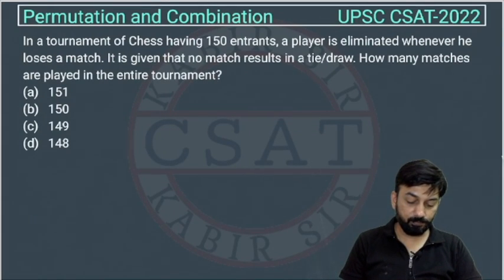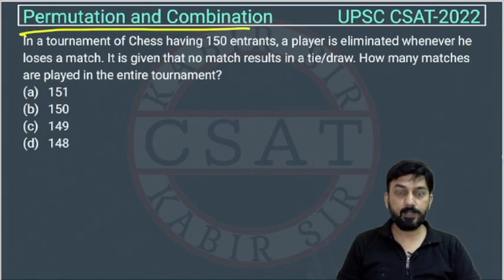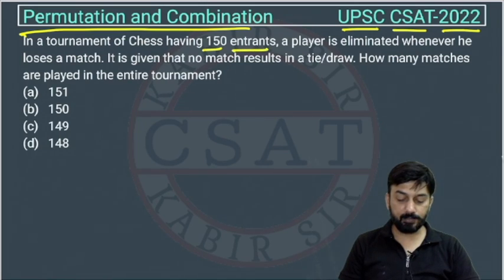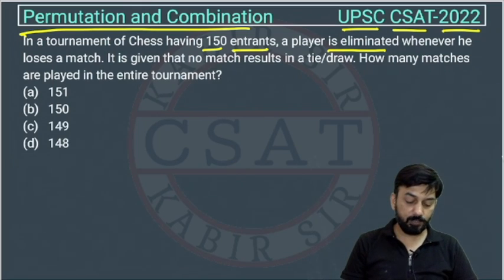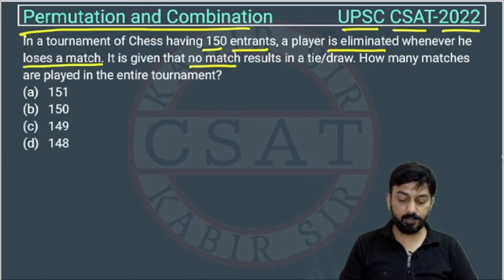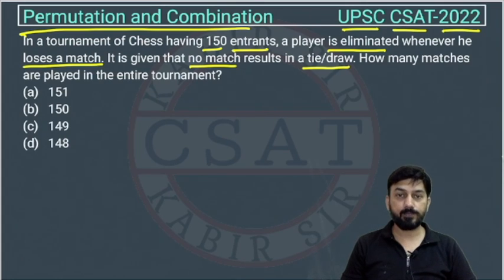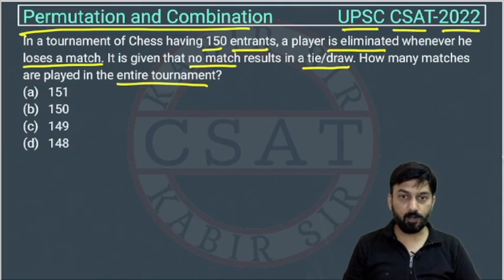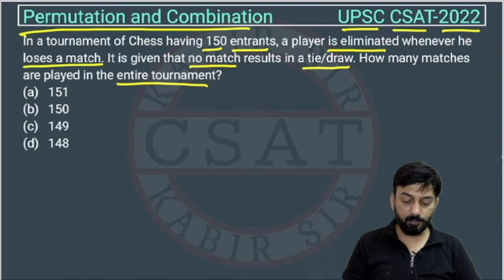This is a question from the permutation and combination chapter, asked by UPSC in their CSAT paper of 2022. In a tournament of chess having 150 entrants, a player is eliminated whenever he loses a match. It is given that no match results in a tie or draw. How many matches are played in the entire tournament? So this is a knockout kind of game — there are 150 players.